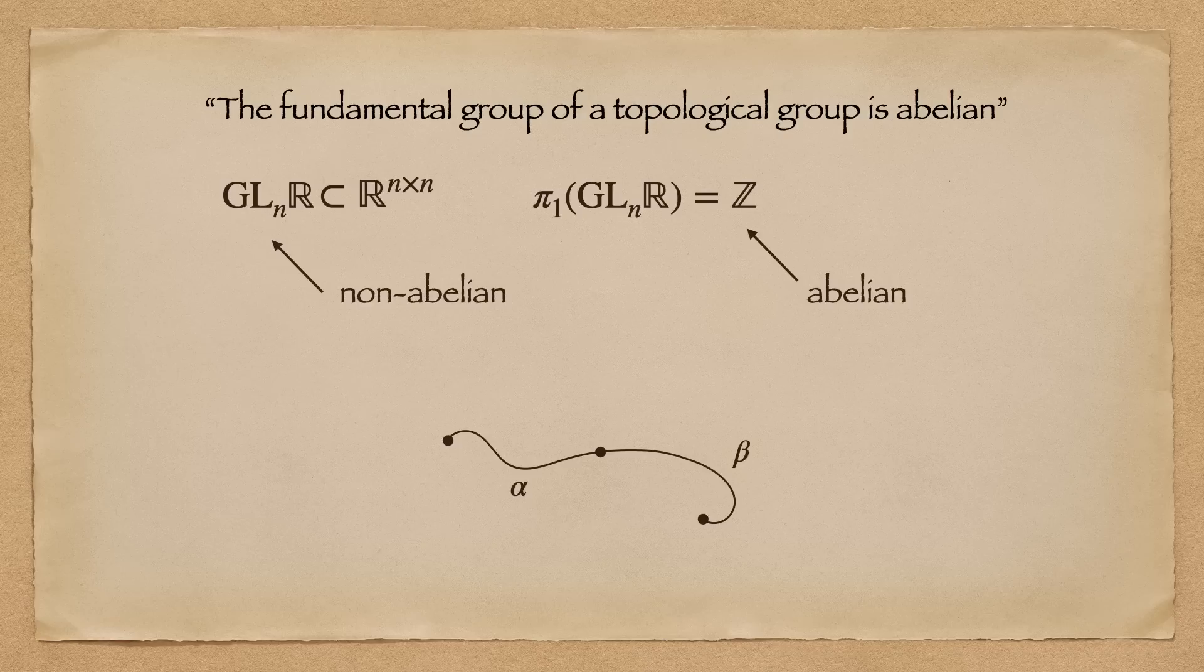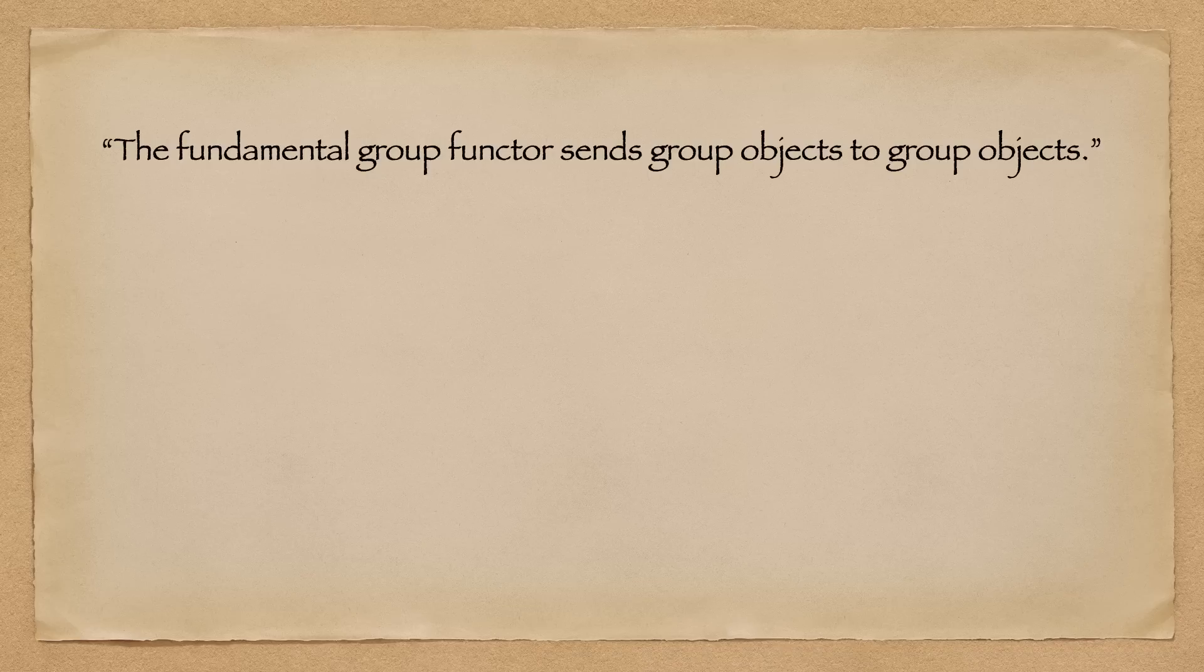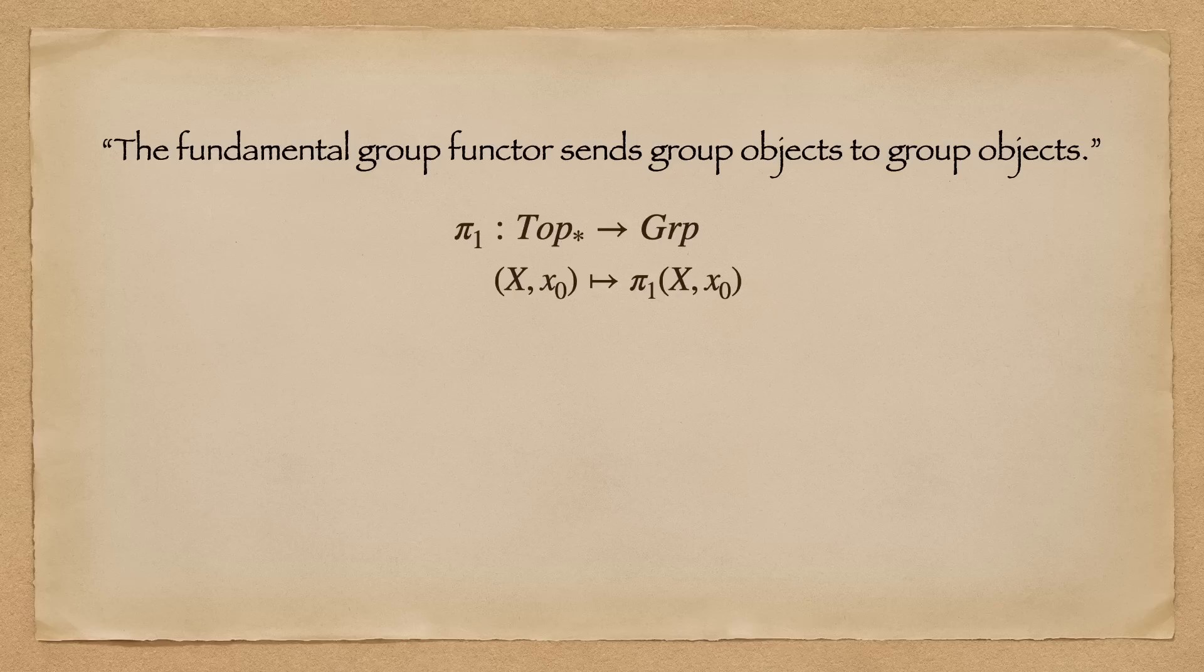However, here's a cute one-line proof using category theory. The fundamental group functor preserves products, hence it sends group objects to group objects. It sounds like abstract nonsense, but what it's really saying is that pi 1 serves as a functor from the category of topological spaces with fixed space points to group.